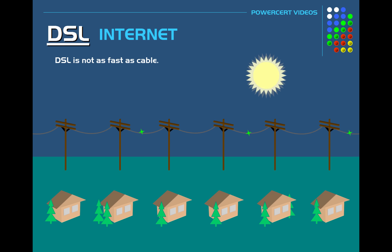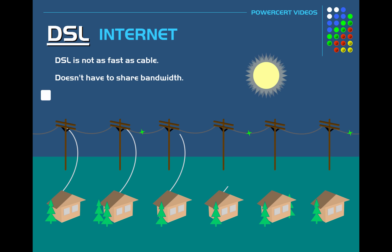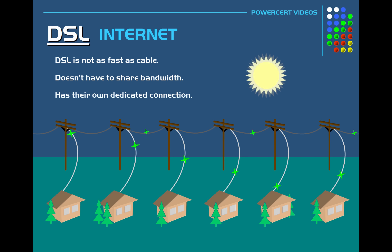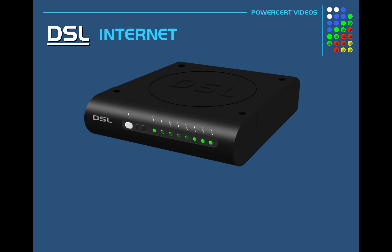DSL is not as fast as cable, but it is cheaper. With DSL, you don't have to share bandwidth with your neighborhood like cable does — everyone using DSL has their own dedicated connection; it's not a shared line. DSL is also more widely available than cable because it uses common telephone lines, which are nearly everywhere. The speed of DSL can vary depending on where you live, but on average they offer download speeds anywhere from 5 megabits per second up to 100 megabits per second.